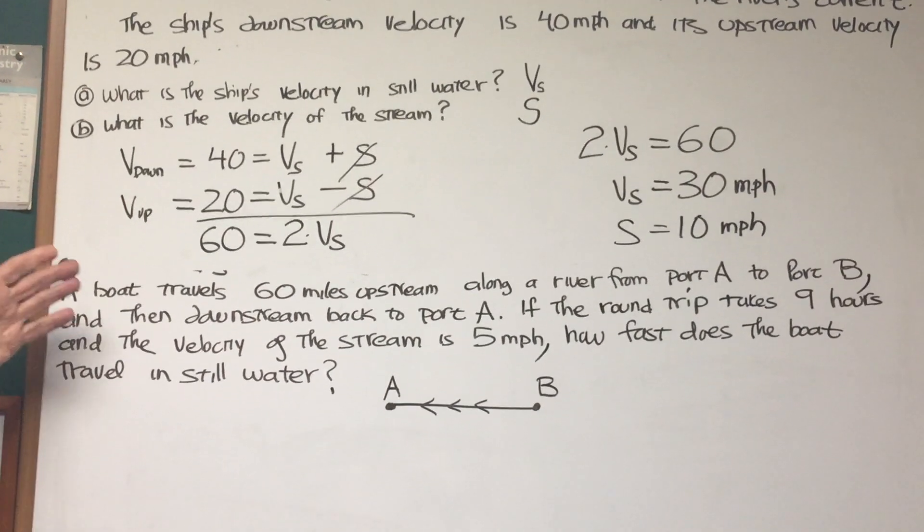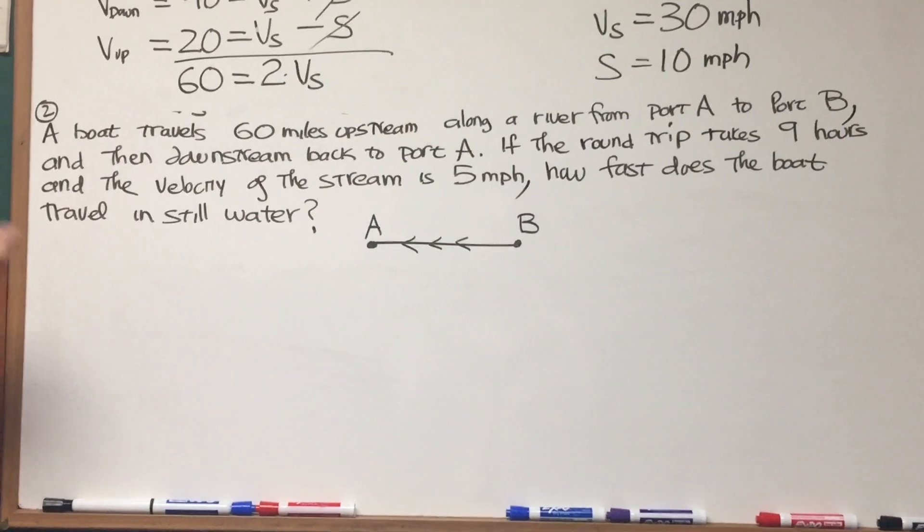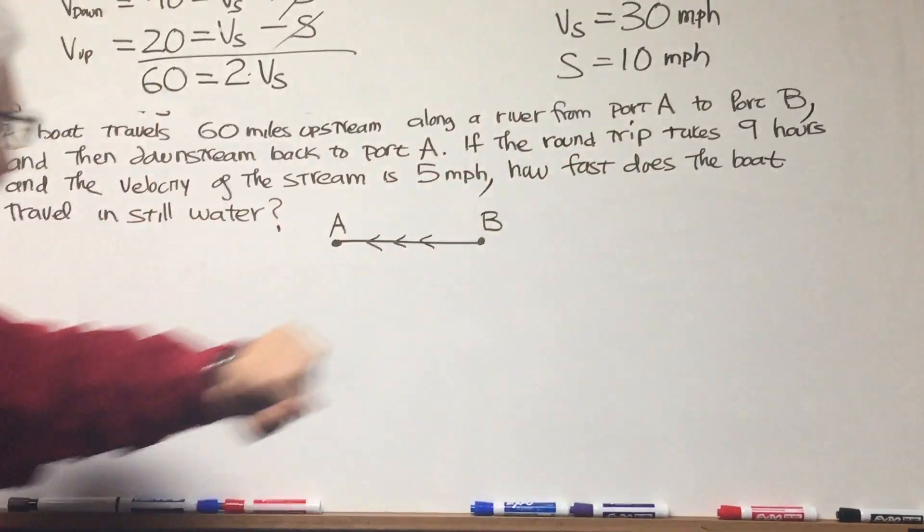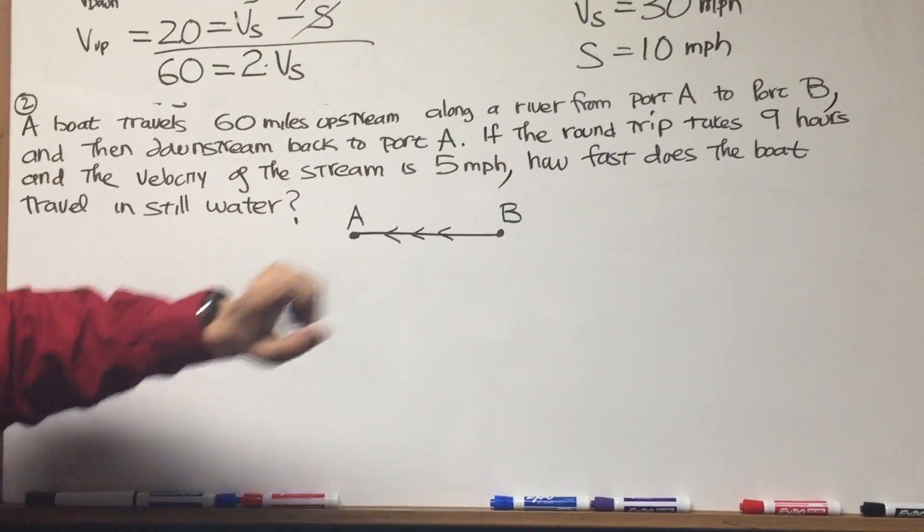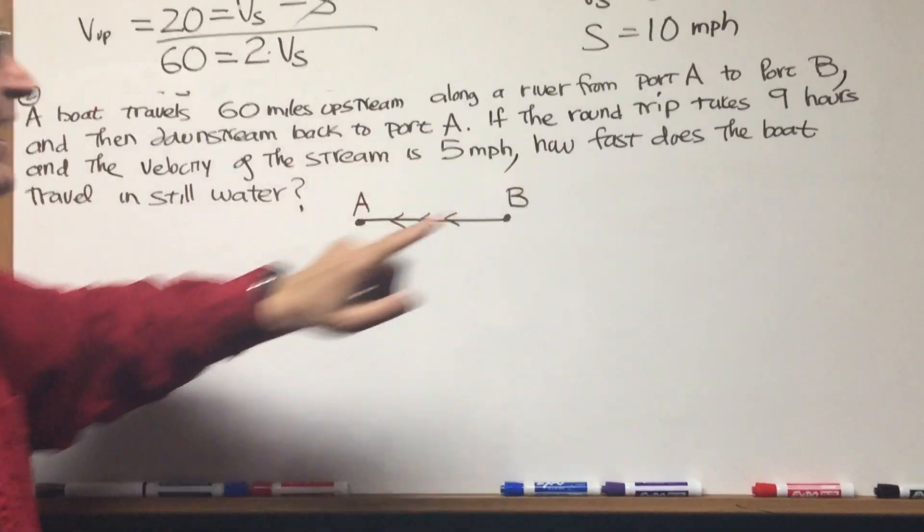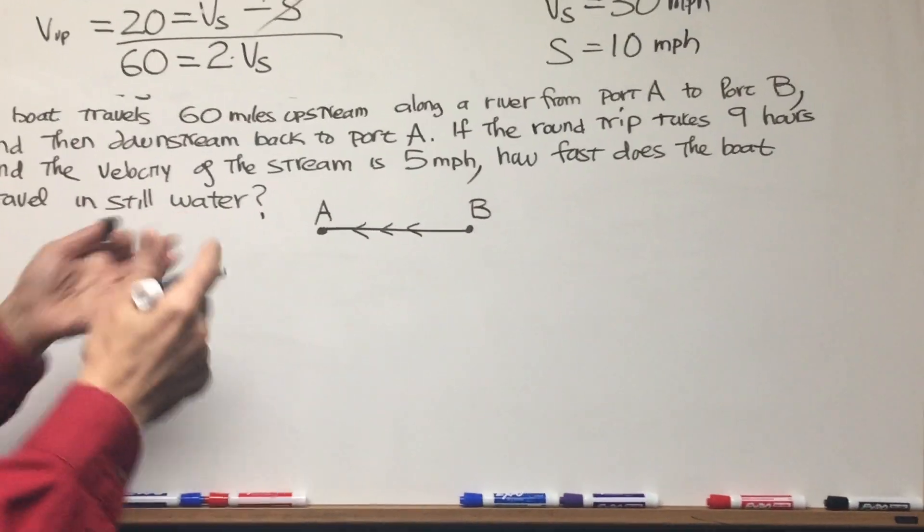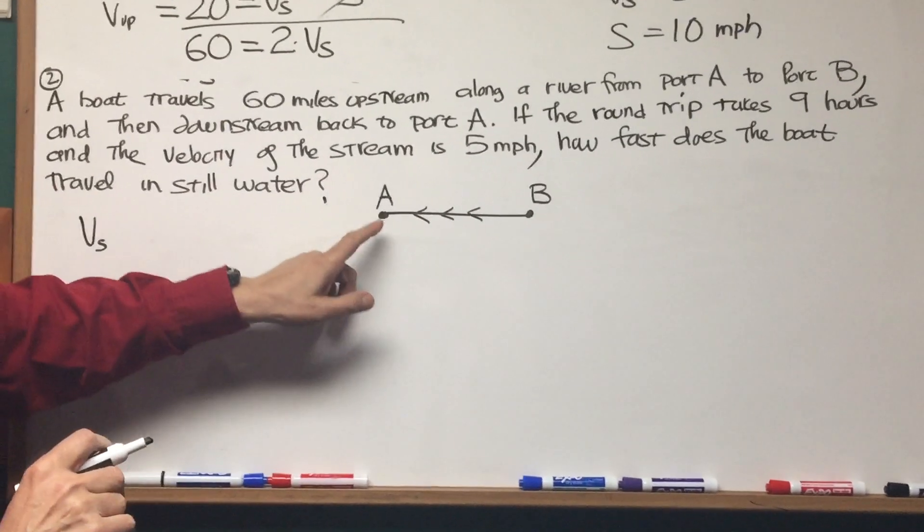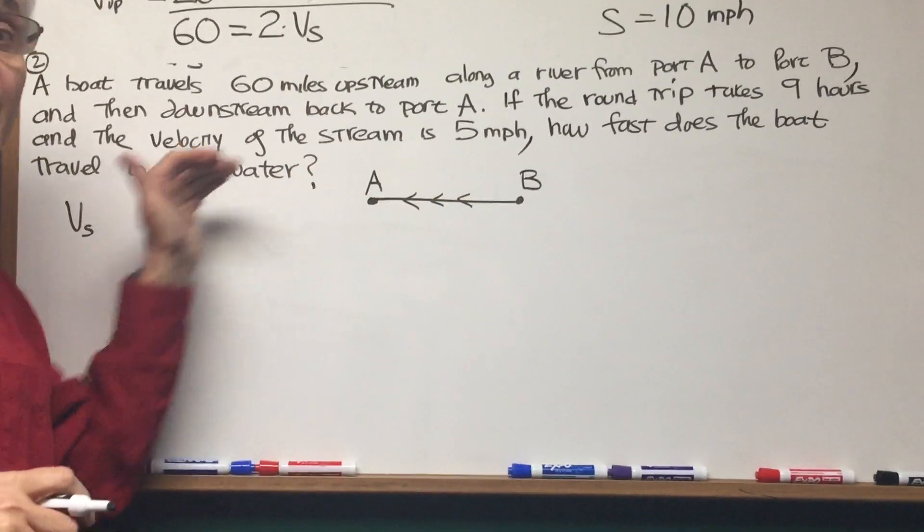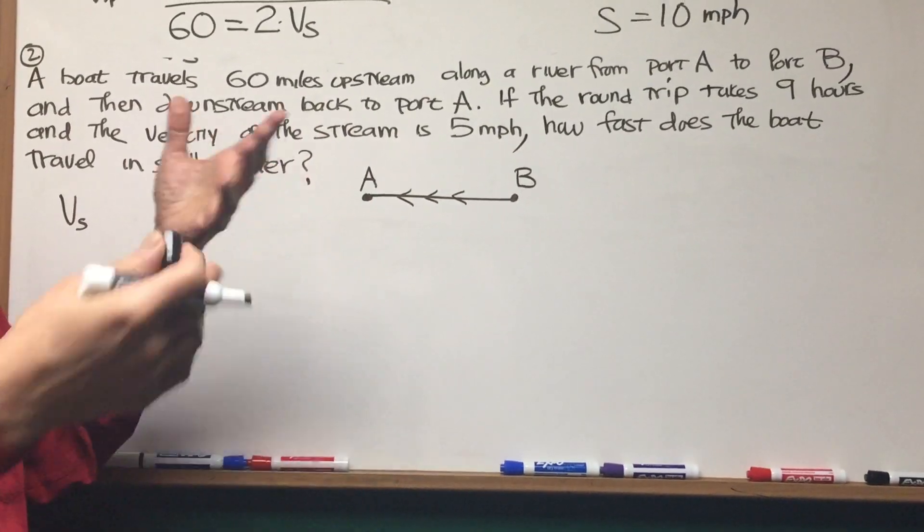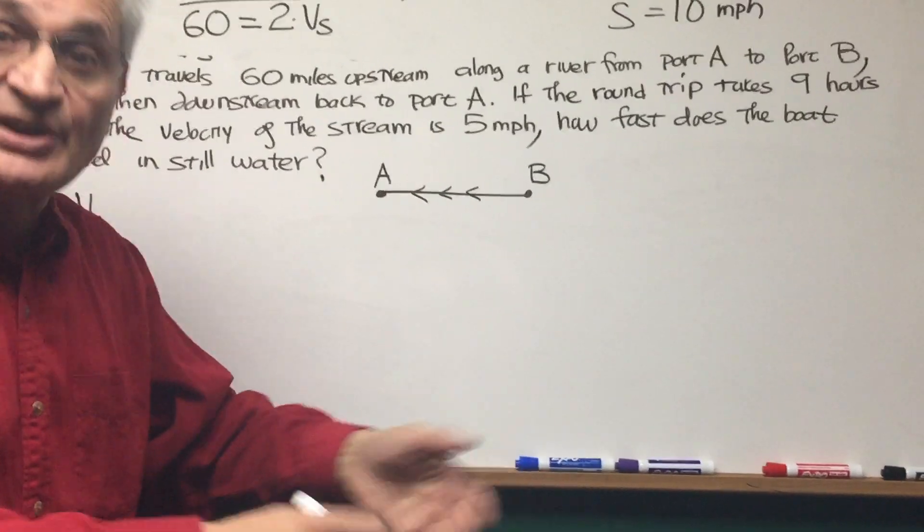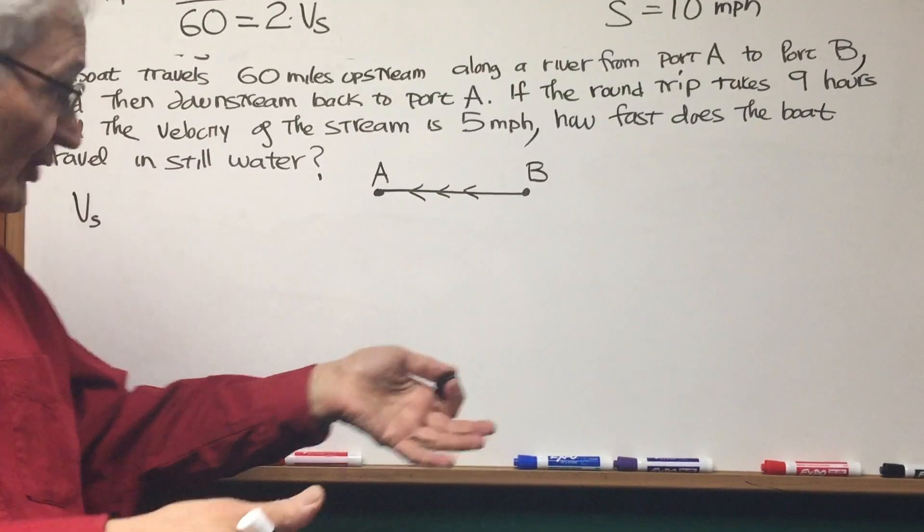All right, now let's move to a second problem, slightly more difficult. Let's read it together. A boat travels 60 miles upstream along a river from port A to port B, and then downstream back to port A again. If the round trip takes 9 hours, and the velocity of the stream is 5 miles an hour, how fast does the boat travel in still water? So again, we're looking for V sub S. So here's a little diagram. The boat travels from A to B. The arrows indicate the direction of the stream. As it goes from A to B, it's traveling against the stream. Therefore, it's going to be slower by an amount S, by an amount of 5 miles an hour. And as it goes back from B to A, it's traveling with the stream, it's going to be going 5 miles an hour faster than it would in still water.